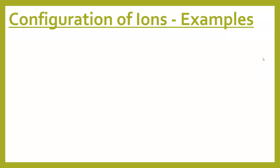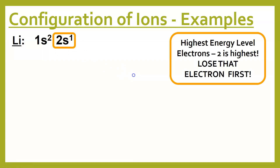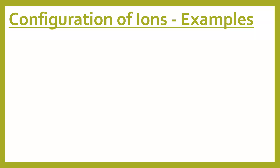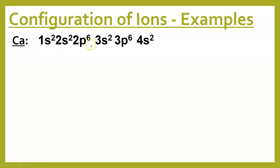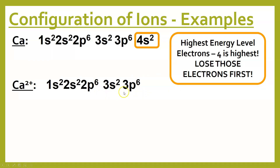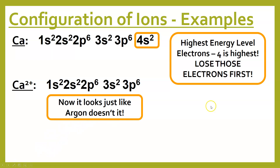Let's look at some examples. For lithium, the highest energy level is level 2, so that's the electron we lose first. Going from neutral lithium to lithium-plus-1, we lose that electron and it now looks just like helium. For calcium, the highest energy level is level 4 — we lose those 4s electrons first. Once we get rid of them, the next level is level 3, which is full, so it looks just like argon — much more stable.